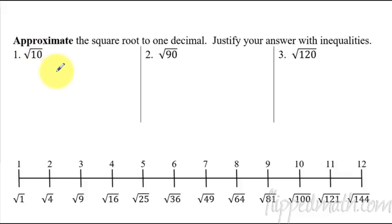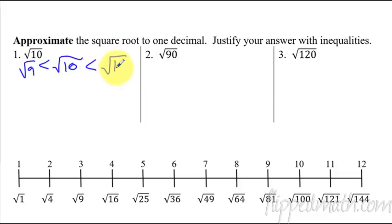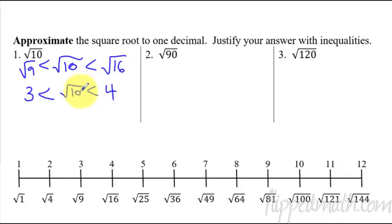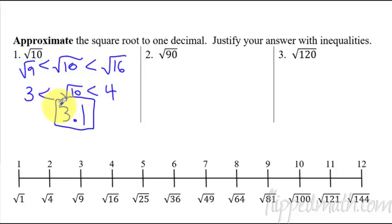Alright, so square root of 10. I want you to write down the square root of 10, and we're going to say that it's in between two different numbers. Square root of 10 is right about here — in between the square root of 9 and the square root of 16. So we say it's in between those two. That simplifies to: 3 is less than square root of 10, which is less than 4. So the square root of 10 must be 3-point-something. I'd say 10 is really close to 9, so I'm going with 3.1. That would be about my estimate. That's how you show your work on these problems without a calculator, just trying to estimate.